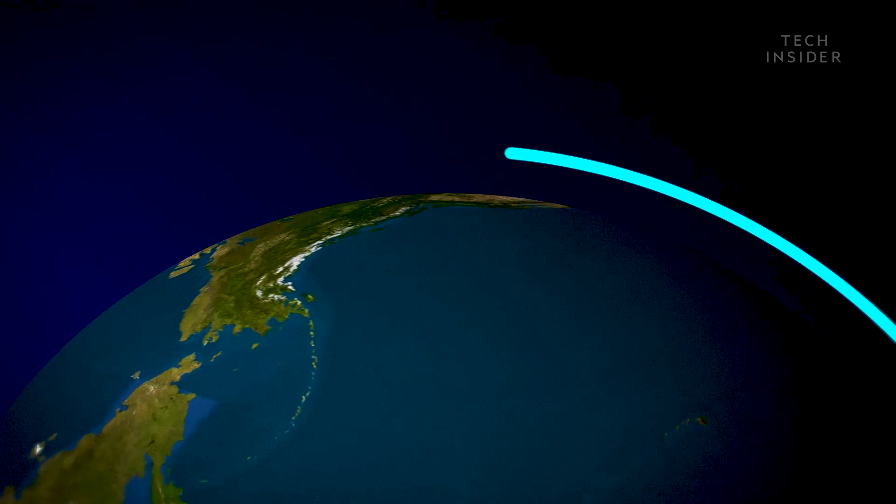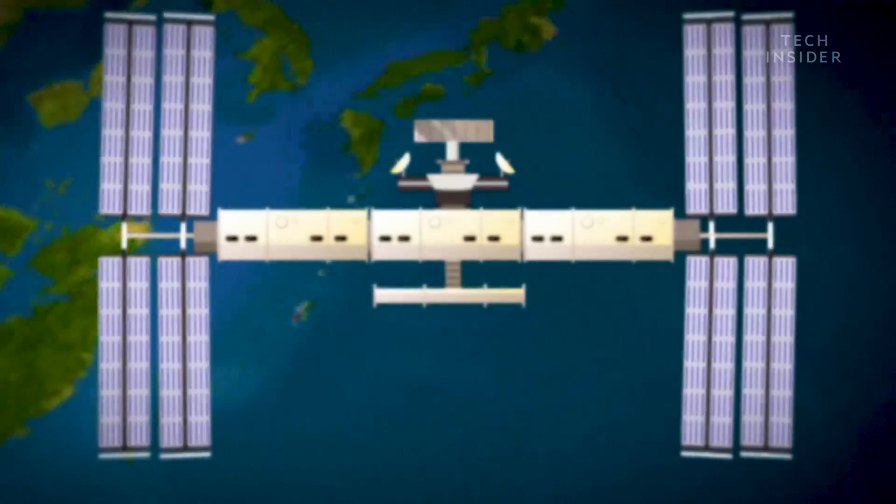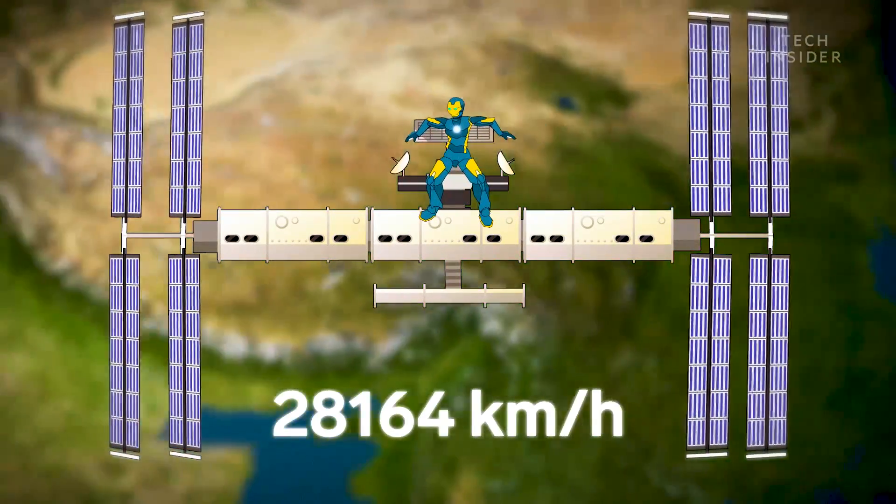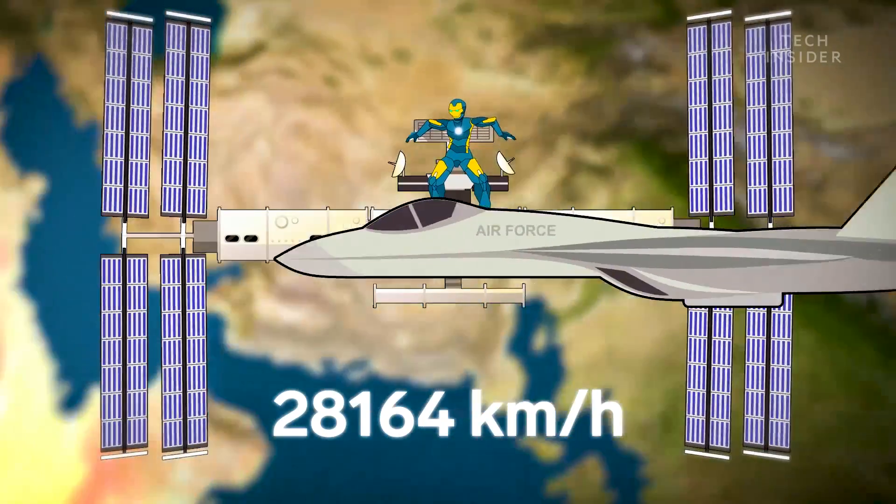The reason is speed. You see, the ISS might be called a station, but it's hardly stationary. It's actually moving 12 times faster than a jet fighter.